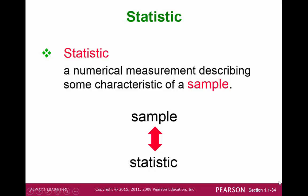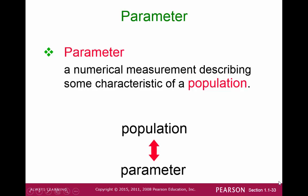Now, remember that we had defined statistics earlier as a subject, but this definition of statistic is an actual value of a sample. Back to the parameter: if we take a look at the average age of all Kenyatta College students that we might have gotten from the registrar's office, then that average age would be considered a parameter.